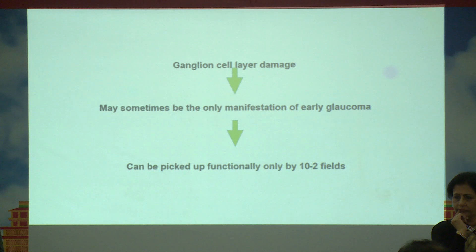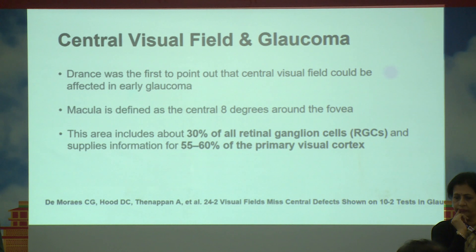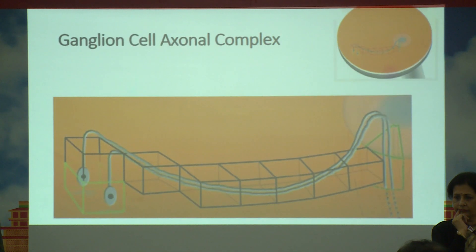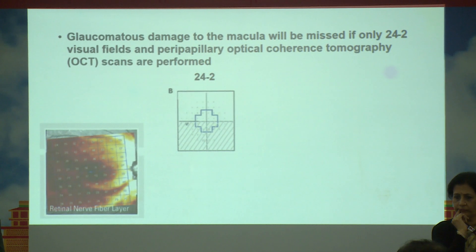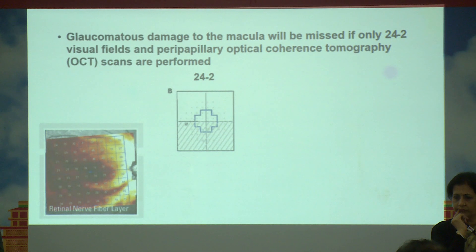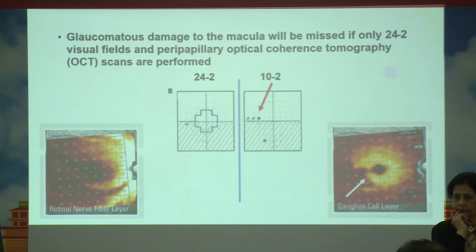Structure-function correlation plays a very important role here. Ganglion cell layer damage can happen in the earliest stages and can sometimes be the only manifestation of early glaucoma. This is because 30% of retinal ganglion cells and 50–60% of the primary visual cortex supply information from the macular region — anatomically proven and supported by publications including Curcio et al. and Curcio and Allen starting in 1990. The key scenario is when a 24-2 is perfectly normal and RNFL looks normal, but a 10-2 picks up something — enabling early diagnosis and initiation of therapy.